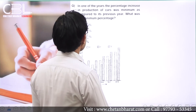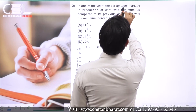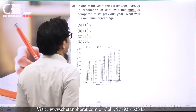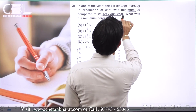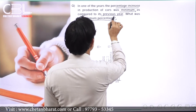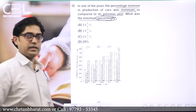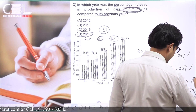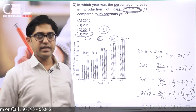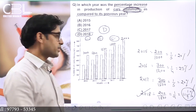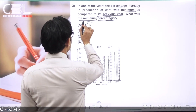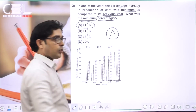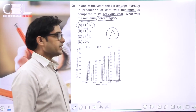Next question: In one of the years the percentage increase in production of cars was minimum compared to the previous year. What is that minimum percentage? Previous question में percentages थीं: 20%, 25%, 20%, and 11 1/9%। Minimum = 11 1/9%। A option is the answer।